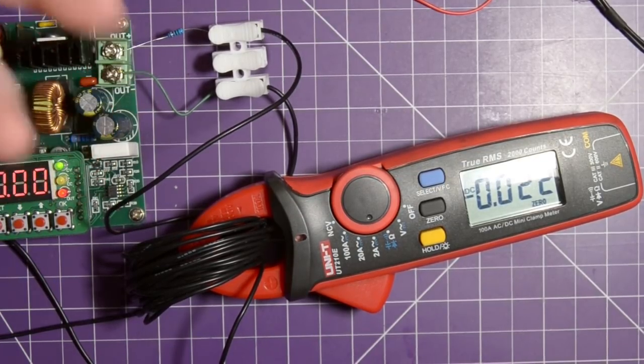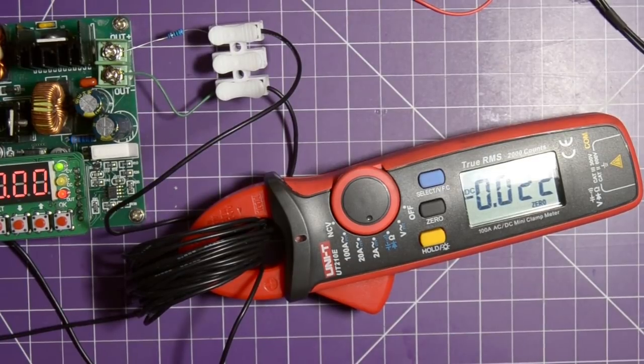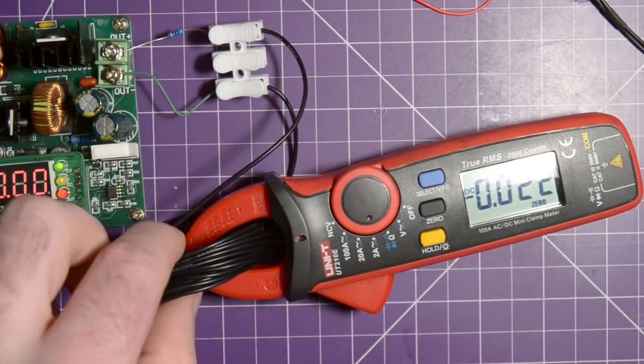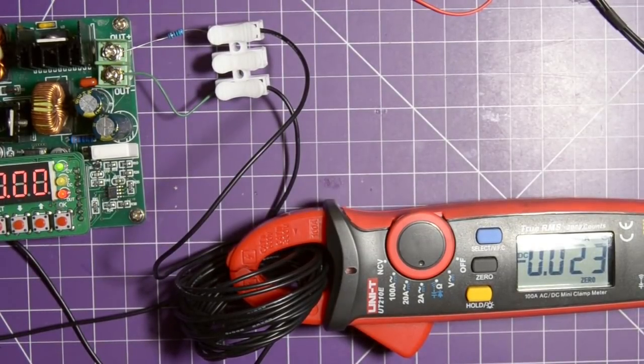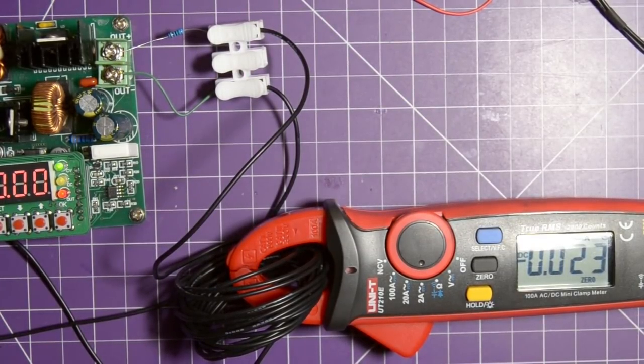Or you can just check these little microscopic loads like this - 1.3 milliamps isn't very much. So if you only have an amp clamp you can do it like this. Hope you liked that little tip. Thanks for watching.